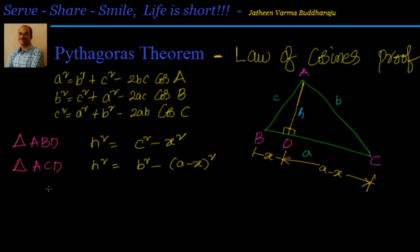If I equate, I will have c² - x² = b² - (a - x)². That is nothing but equal to c² - x² = b² - a² - x² + 2ax. Now we can cancel x².